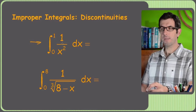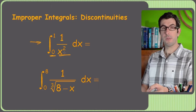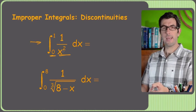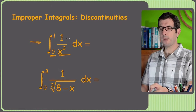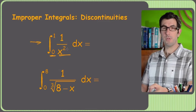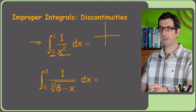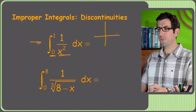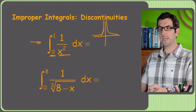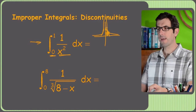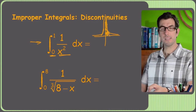Usually when you take definite integrals, you wait until after you've integrated to plug in your limits of integration. But the problem here is that if you took a second and actually tried plugging in zero to the original function — the thing you're integrating — you're going to get undefined, you're going to get infinity. This thing has an asymptote at zero. The general shape of something like 1 over x squared shoots up to infinity at the y-axis. So when we take the integral from zero to one, we're trying to find this area.